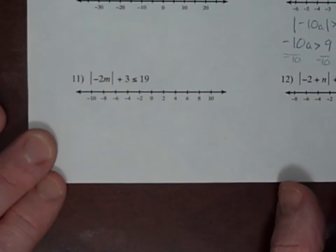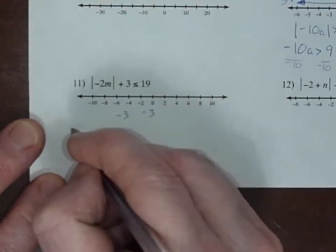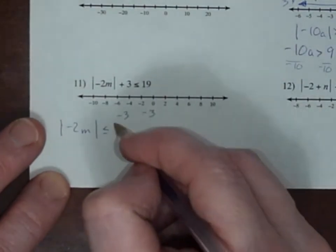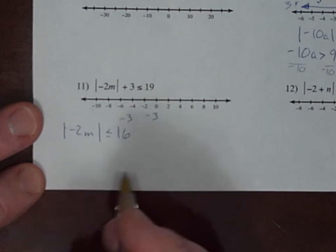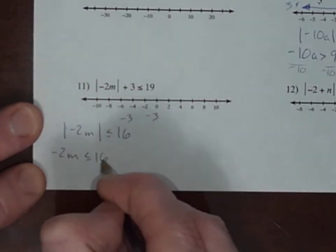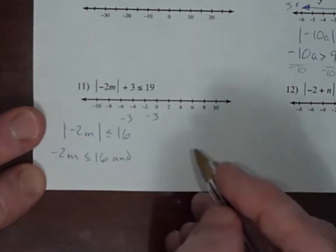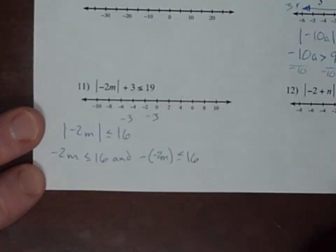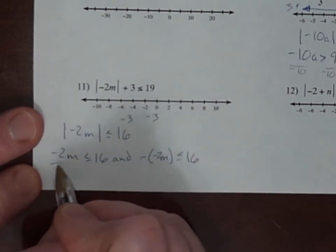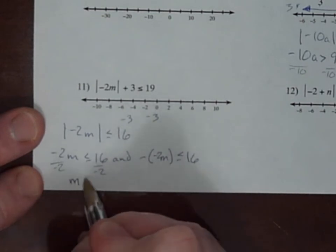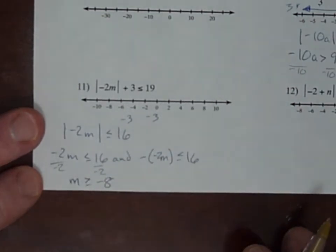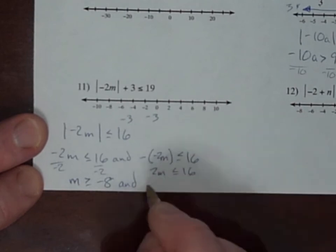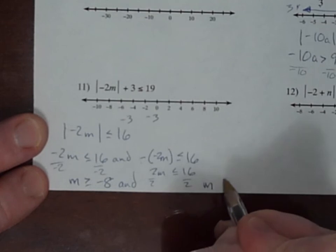And this last one — number 11. If you subtract 3 from both sides, then the absolute value of negative 2n becomes less than or equal to 16. So either negative 2n is less than or equal to 16 — the less than means an and, so the intersection where the negative of that is less than or equal to 16. Working those through: divide by negative 2, you have n with the flipped inequality greater than or equal to negative 8. And since negative times negative is positive, that's just 2n less than or equal to 16 — divide by 2 and n is less than or equal to 8.